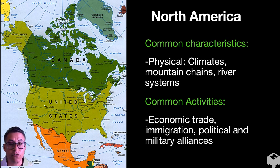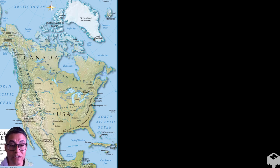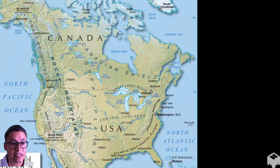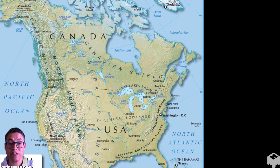Here's some of the things that North America shares. Common characteristics could be physical, things like climates, mountain chains, river systems, and then things like economic trade or immigration or even political and military alliances. So let's take a look at the physical first. Here's a map of the North American continent. And as you can tell already, there are some commonalities. For instance, if we zoom in here to the United States and Canada, we see that the Rocky Mountains and the Great Plains extend all the way into each of those two countries. So they share a common characteristic, which is a physical feature.